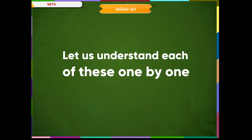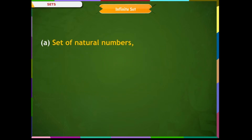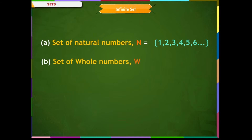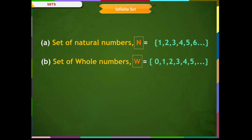Infinite sets. A set is said to be an infinite set if it has an unlimited number of elements. For example, the set of natural numbers N = {1, 2, 3, 4, 5, 6, ...} and the set of whole numbers W = {0, 1, 2, 3, 4, 5, ...}. In both examples, we see that the elements are infinite; that is, the number of elements is not fixed. So, set N and set W are infinite sets.